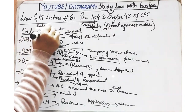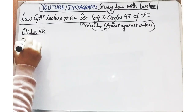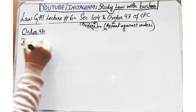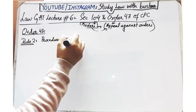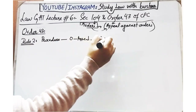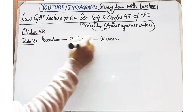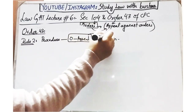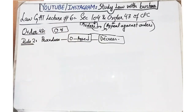To yeh thi Order 43 ke Rule 1 ke andar list batai gai thi, jinmein kin kin rules ke andar aap appeal file kar sakte ho orders ke against. Order 43 ka Rule 2 kehta hai ke the procedure of appeal against decree in Order 41 is the same as appeal for orders - yani Order 41 ke andar jo procedure appeal ka hai against decrees, wohi procedure follow hoga appeal against orders ke liye bhi.